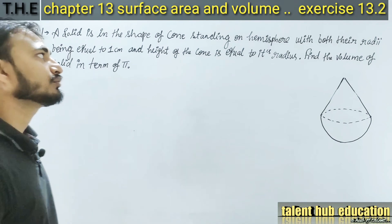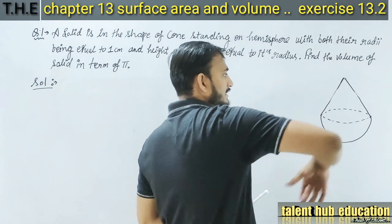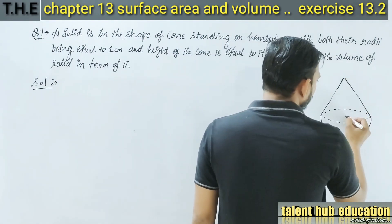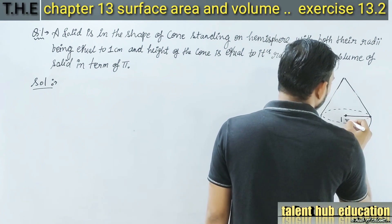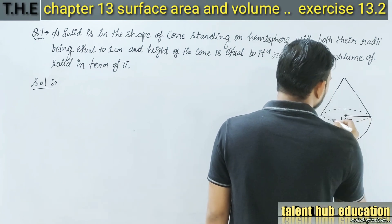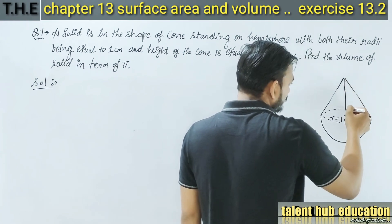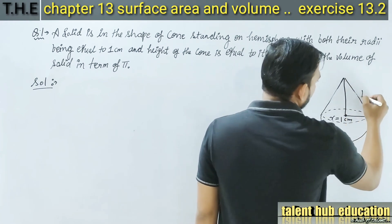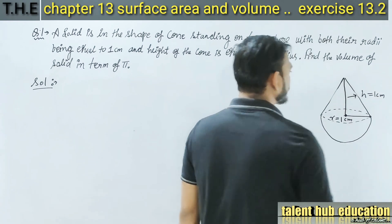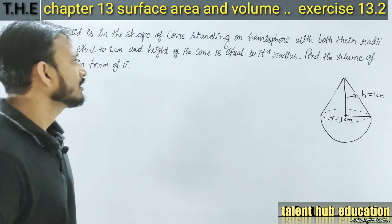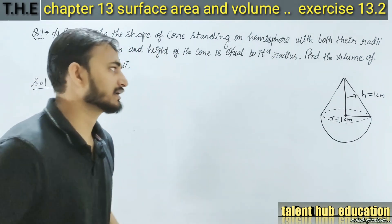And height of the cone is equal to its radius. यह रहा cone। यहां से यह जो radius है, यह 1 cm दिया है। और यहां से cone की जो height दी है, यह भी 1 cm है। Find the volume of solid in terms of pi.